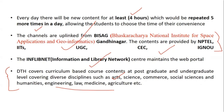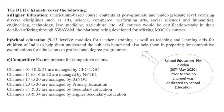The 40 Swayam Prabha DTH channels are divided into three categories: higher education, school education, and competitive education. Higher education covers disciplines like arts, science, commerce, engineering, technology, law, medicine, and agriculture — these are certified courses offered through Swayam and the platform also supports MOOC courses. School education covers class 9 to 11, providing teacher training and teaching-learning aids to help students prepare for exams or professional degrees.